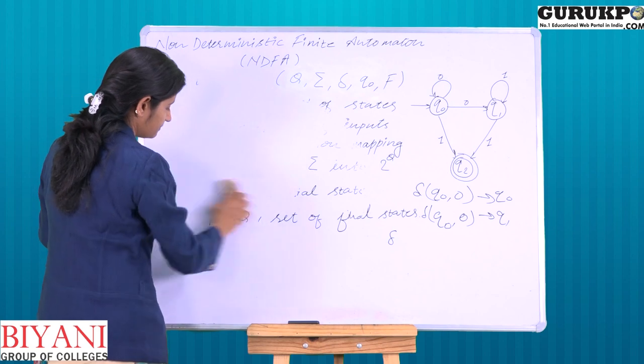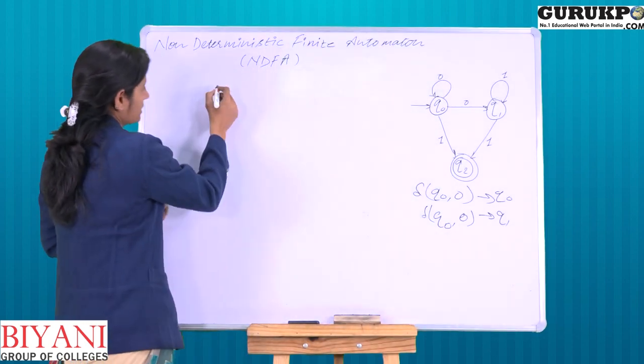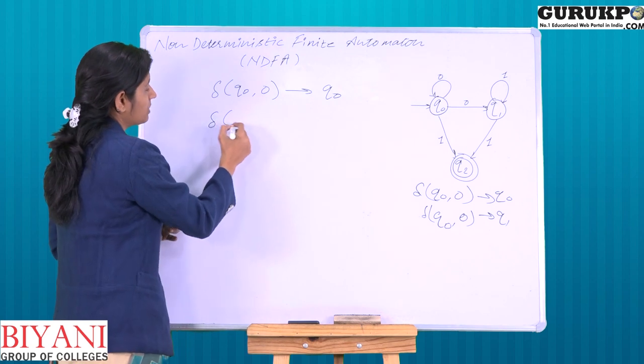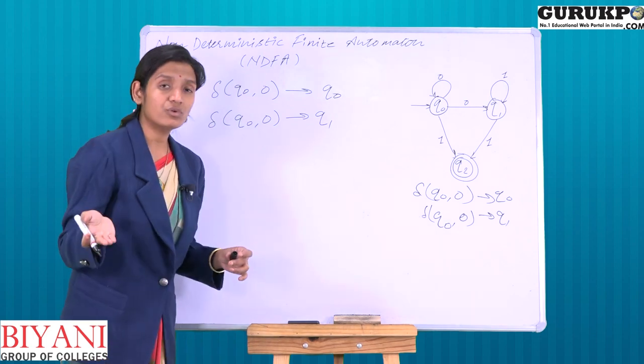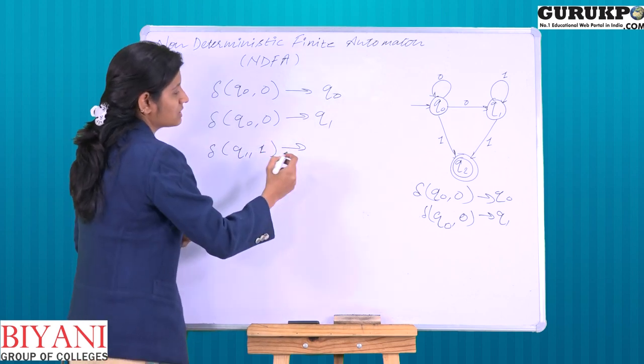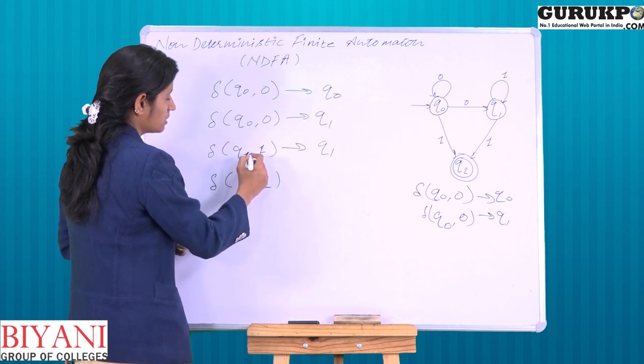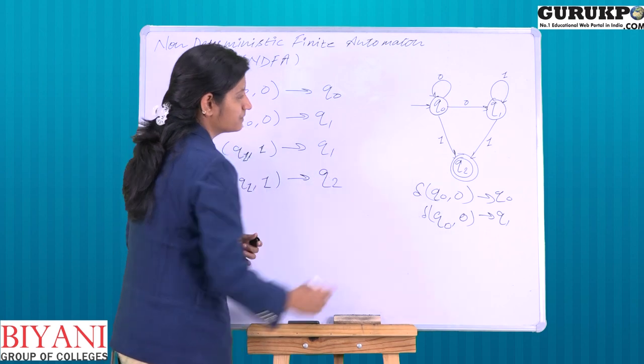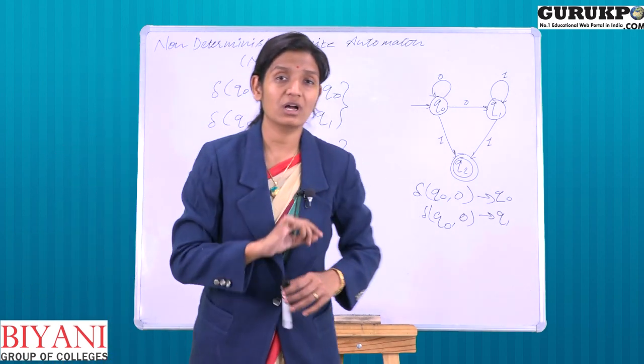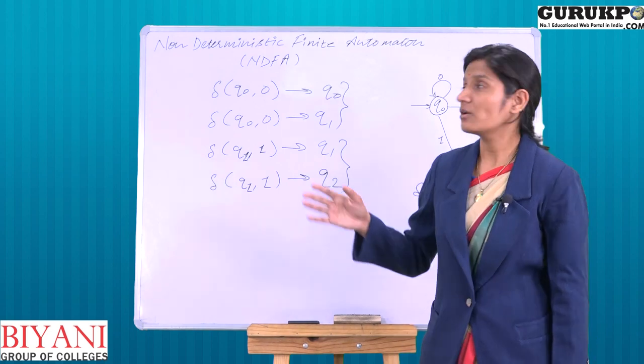Rest of the working is same. When we put 0, we have moved to Q1. Then we said that when we put 1 on Q1, one possible transition is stay at Q1, and another is to move to Q2. Now you can easily see that in a current state if we put one input, we have two options for moving. So which one to choose? This is the non-determinism of this DFA.